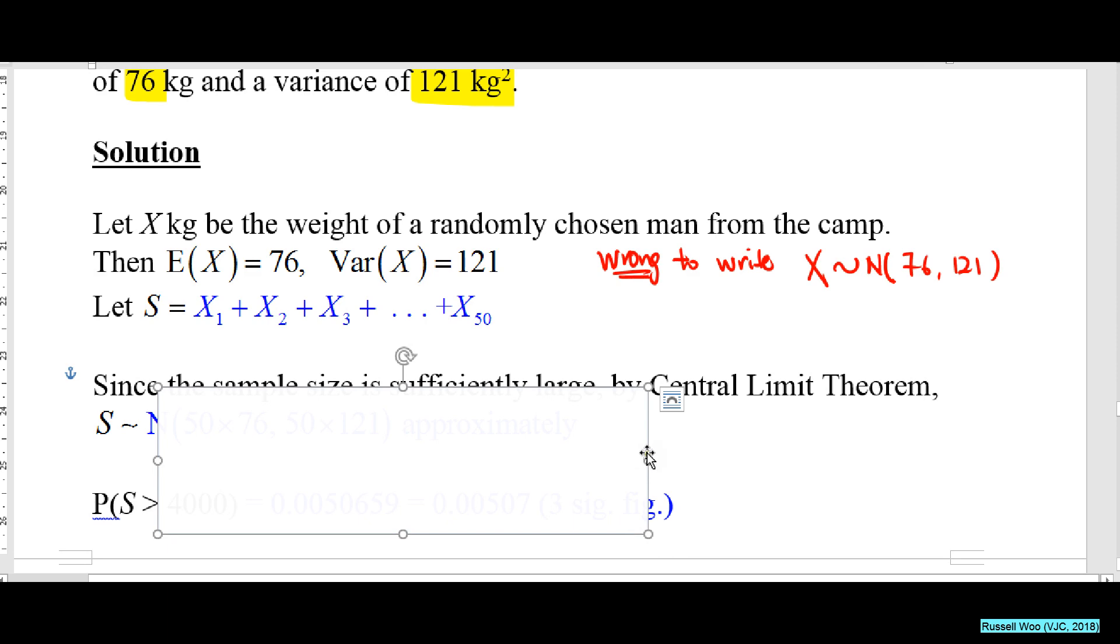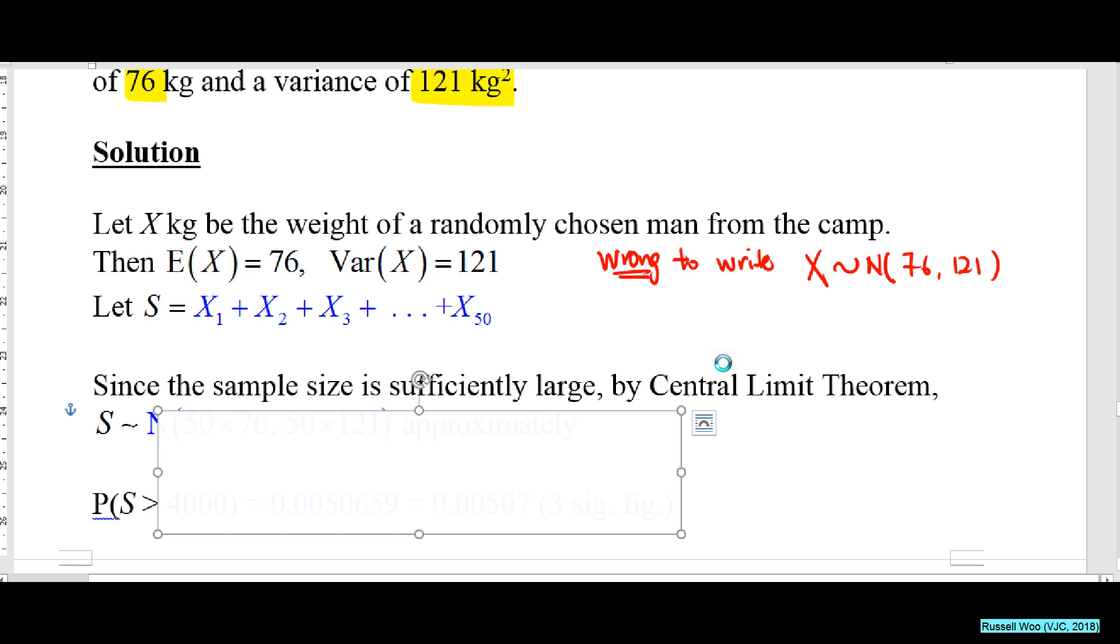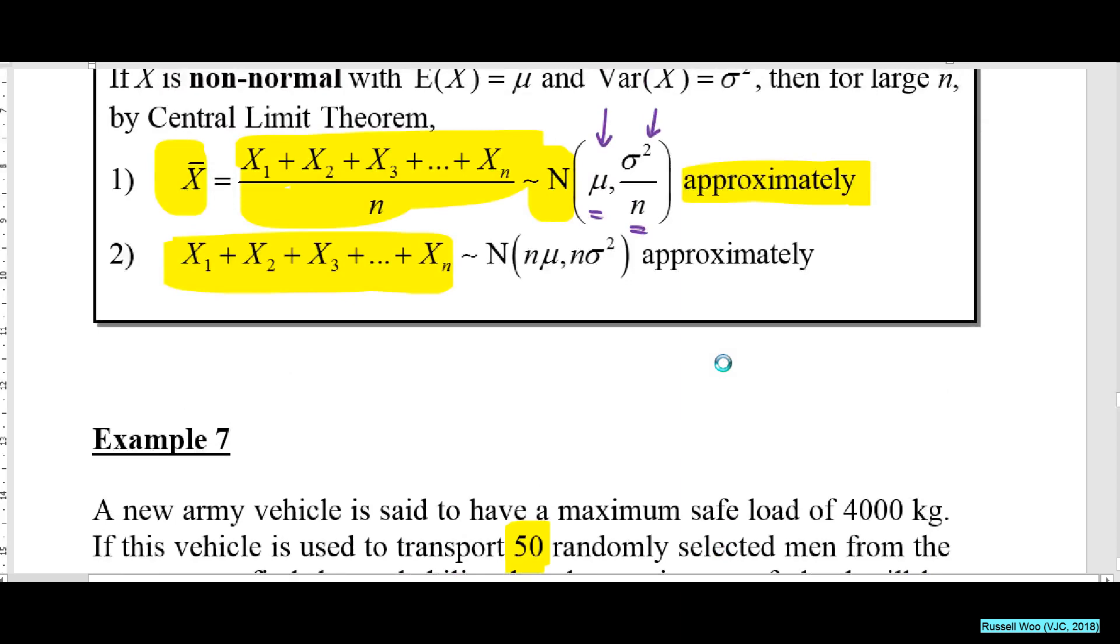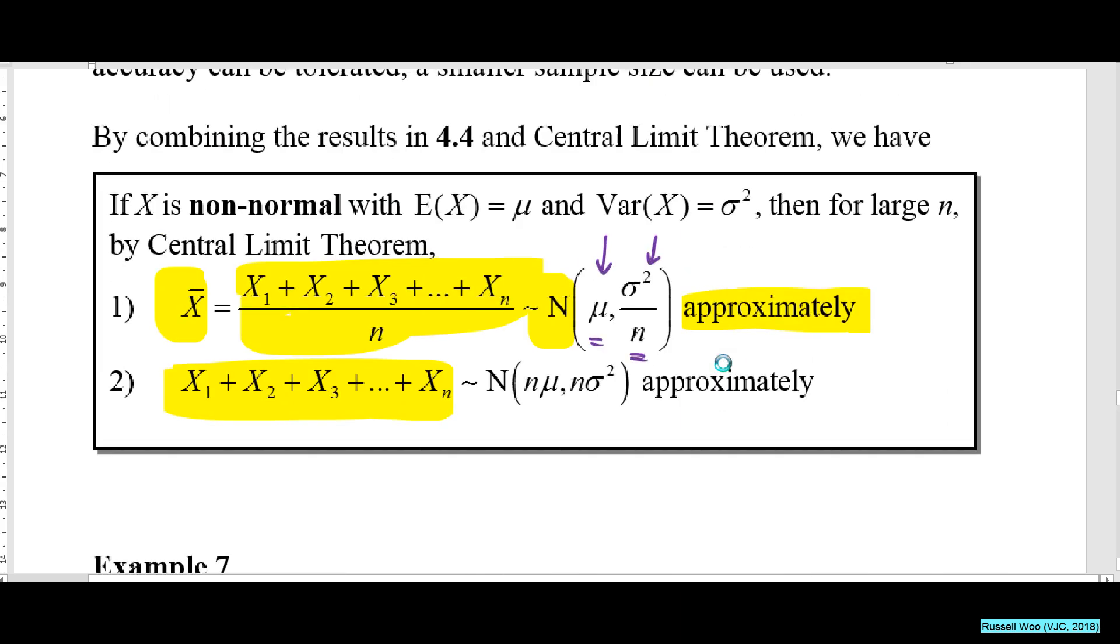So now let us refer to 4.6, the line above only. If X is not normal but I take enough samples, n is large enough, the sample sum follows a normal distribution with this mean and this variance, approximately.